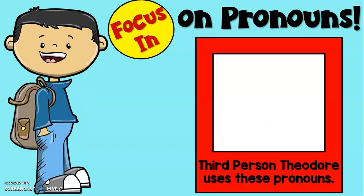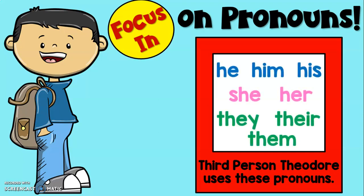Now for third person, Theodore will also have different pronouns because it's a very different point of view. In this case, the narrator is watching the story, but the narrator is not in the story. The narrator is speaking about other characters, but not about themselves. This is a very common point of view used in fiction. Some of the pronouns you would see are: he, him, his, she, her, they, their, them.